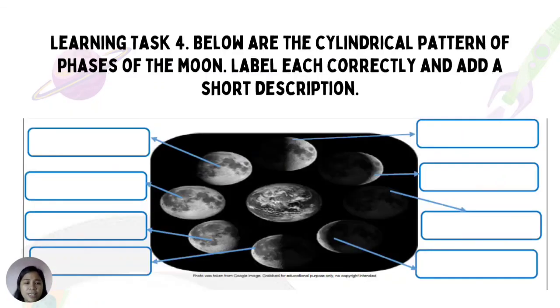For Learning Task Number 4, below are the cyclical pattern of phases of the moon. Label each correctly and add a short description.